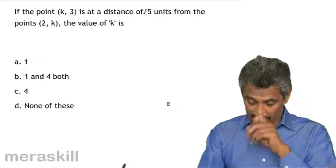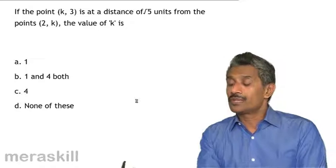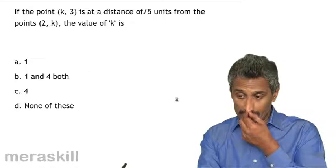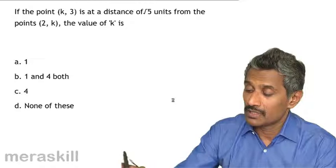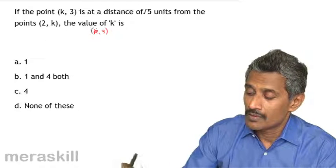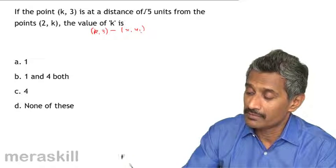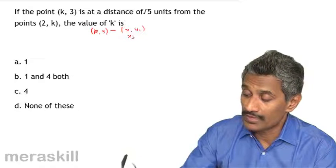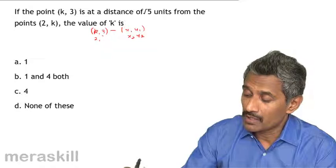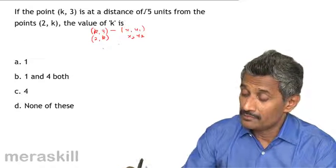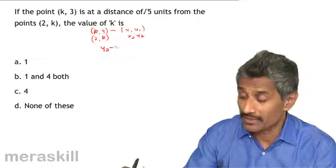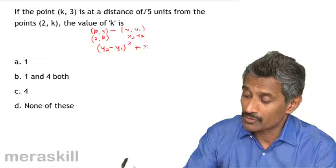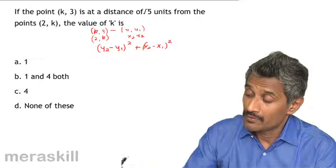Now for the next problem: it's given that the point (k, 3) is at a distance of √5 units from the point (2, k). So (k, 3) is (x₁, y₁) and (2, k) is (x₂, y₂). Using the distance formula: √[(x₂ - x₁)² + (y₂ - y₁)²] = √5.